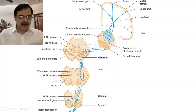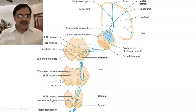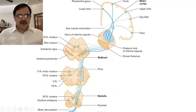Now look at the face representation. The face representation fibers go through the internal capsule, pass through the midbrain, and from the midbrain go to the other side — to the seventh nerve nucleus, which is located in the pons — and supply the respective part of the face. There is a unique property of facial muscles: the upper part of the face has bilateral representation, so if there is a unilateral lesion, the upper part of the face is spared.